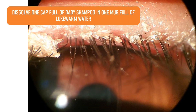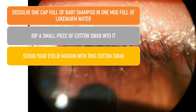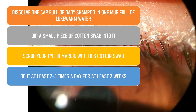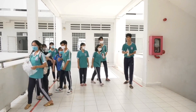Take one capful of baby shampoo in one mug full of lukewarm water and dissolve it. Dip a small piece of cotton swab into it and then scrub your eyelid margin with this cotton swab. Do it at least two to three times a day for at least two weeks to get good results. In case your blepharitis is severe, your doctor will also ask you to apply an antibiotic ointment after doing these lid scrubs.